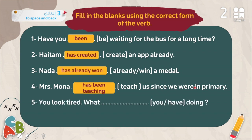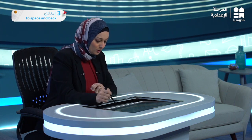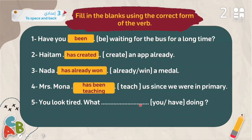Number five: 'You look tired. What have you ___ doing?' We have '-ing' on the verb 'do', which signals present perfect continuous. It's a question, so the structure becomes: What + have + subject + been + verb+ing. The answer is: 'What have you been doing?' Don't forget 'been' — you cannot say 'What have you doing?' That's wrong. You must include 'been'.